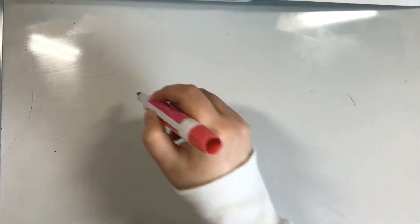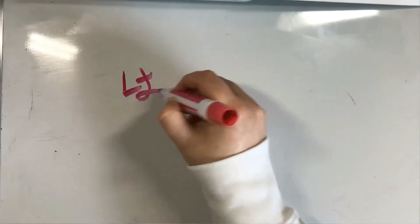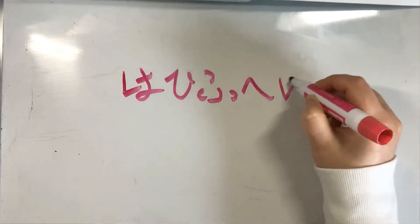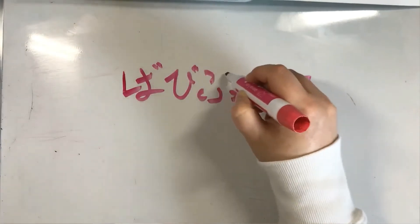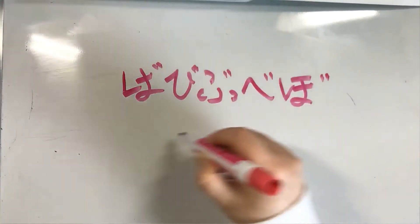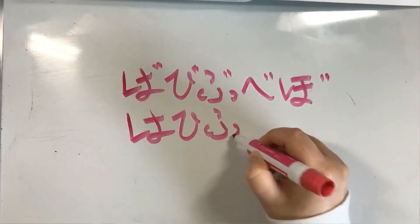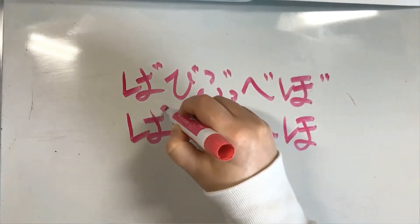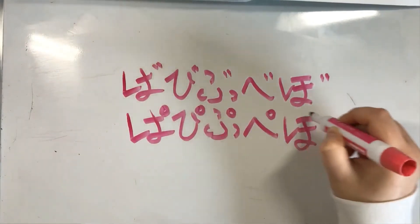And then we had ha, hi, fu, he, ho, which then became ba, bi, bu, be, bo. Or ha, hi, fu, he, ho, which became pa, pi, pu, pe, po.